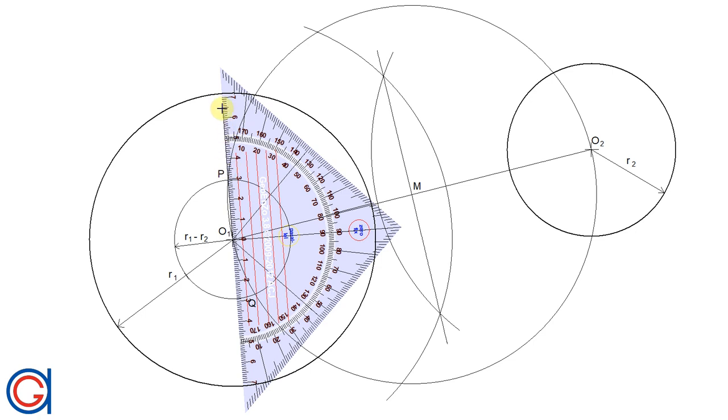With a ruler we're going to draw a line from O1 going through point P and elongate it until it touches the given circle at our first tangent point T1.